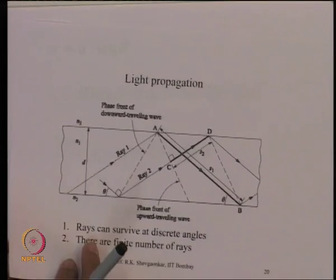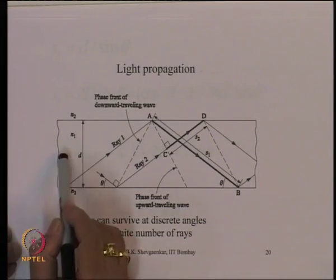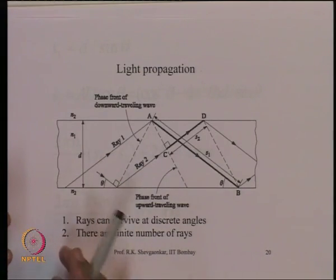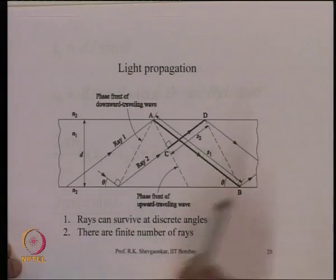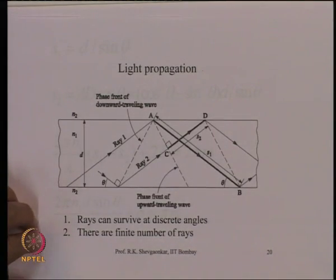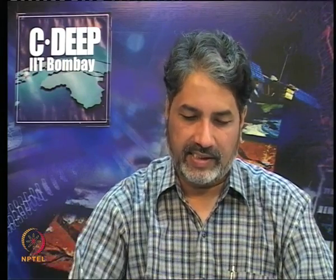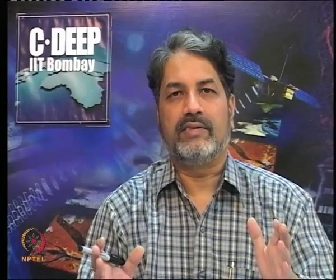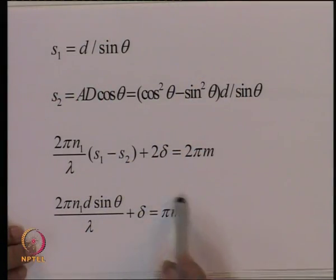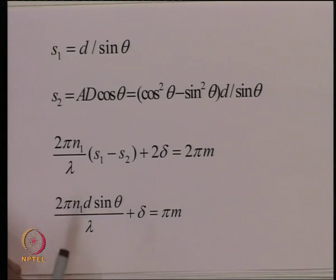This is an important result: even within the acceptance cone θ0_max, not all angles allow sustained propagation. Only rays satisfying this phase condition can propagate. Since m is an integer, this expression gives discrete angles — within θ0_max, the ray can only be launched at very specific discrete angles for sustained propagation.